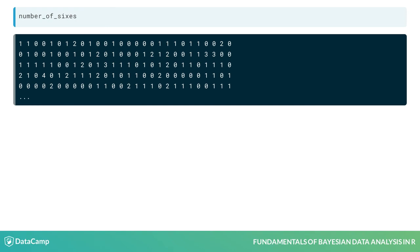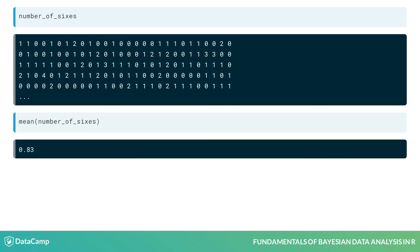Having such a vector makes it easy to calculate new measures from the probability distribution. Say we want to know the average number of sixes we would expect to roll. This is hard to read from the plot but easy to calculate using the vector of samples as we can directly use the mean function in R. Turns out the average number of sixes is 0.83.